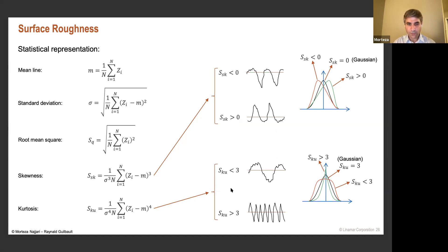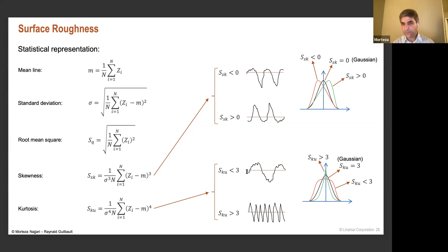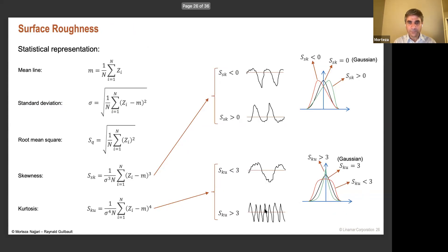Kurtosis equal to three corresponds to a Gaussian distribution. Kurtosis less than three means asperities are further apart from each other, while kurtosis greater than three means sharper asperities sitting very close together. These statistical parameters are used to integrate surface roughness into numerical simulation.